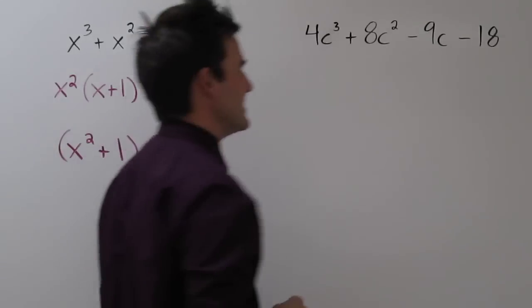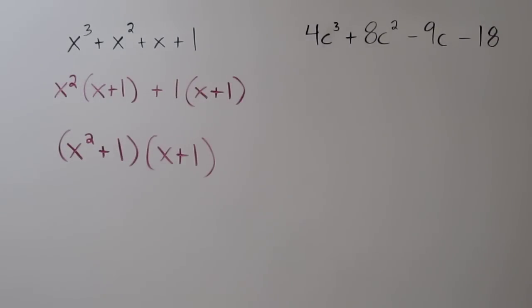Let's try another example. Over here, we have 4c cubed plus 8c squared minus 9c minus 18.